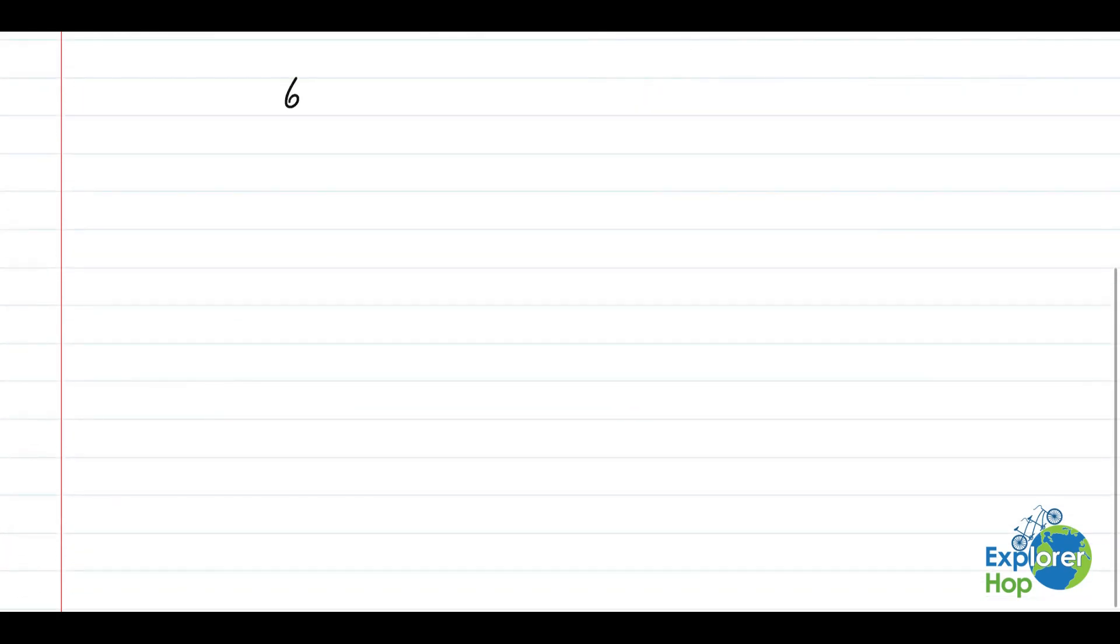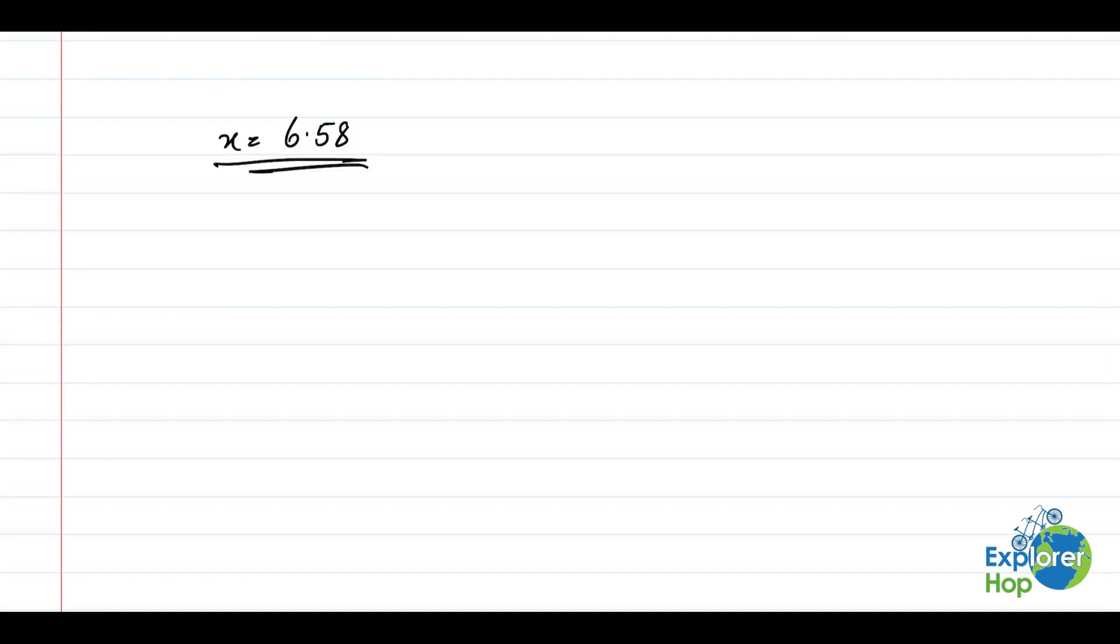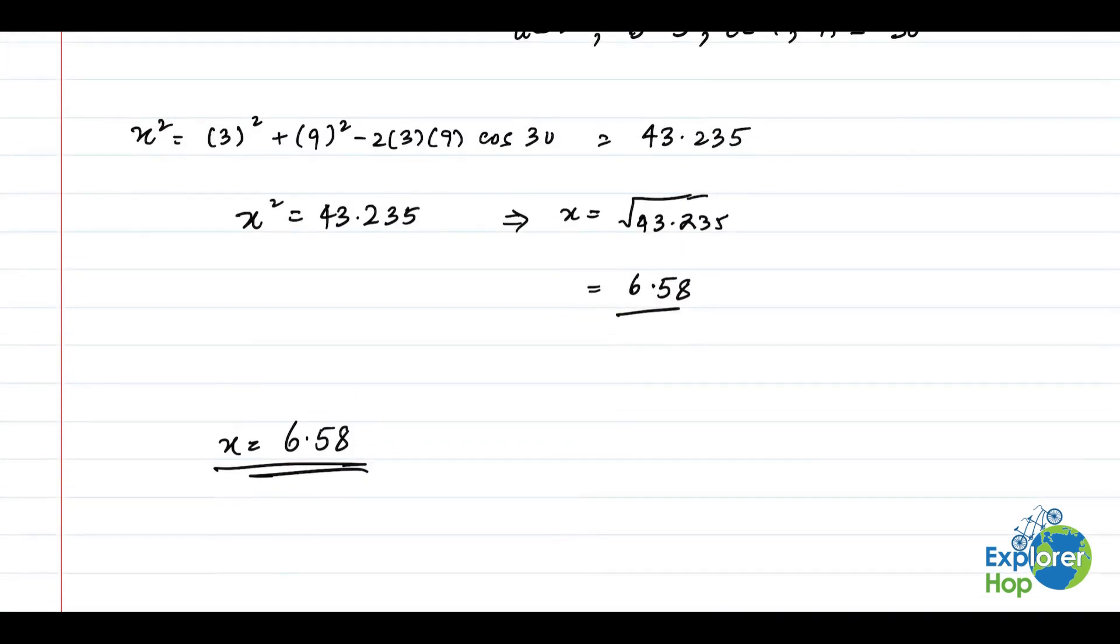So now we know that the unknown side of the triangle x equals 6.58. So that's our answer. And that's all. Thank you for joining us. I'll see you all in the next lesson. Thank you.